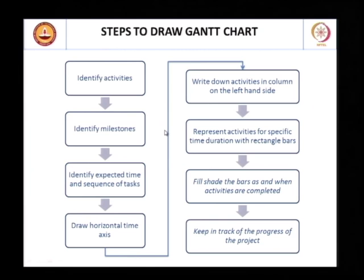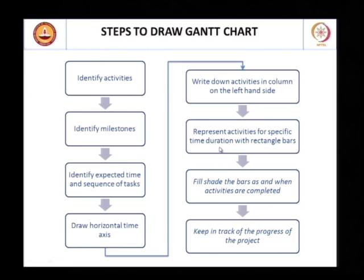To summarize, when we want to draw a Gantt chart, these are the steps: identify activities, identify milestones, identify expected time and sequence of tasks, draw the horizontal time axis, write the activities and represent them with bars or milestones for the specific time duration required. The last two steps are to fill in the bars as activities are completed and keep track of progress.